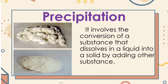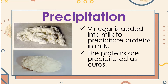By adding another substance — for example, vinegar is added to milk. Milk is a liquid, but when you mix vinegar with milk, they will precipitate and become solid. See that picture.